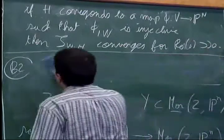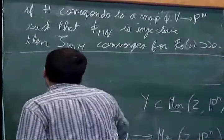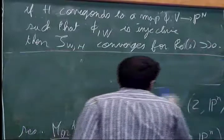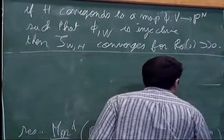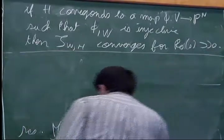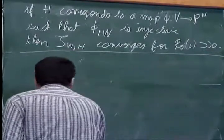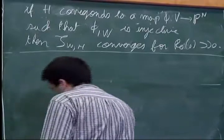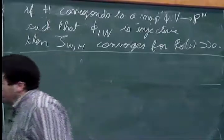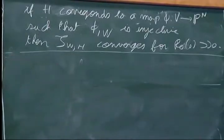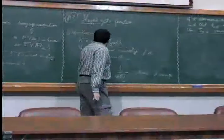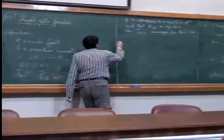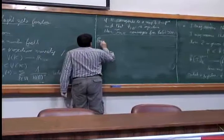If the height comes from an embedding of W into some projective space — a map φ from V to some projective space such that φ restricted to W is injective — then this zeta function ζ(W, h) converges for real part of s large enough.